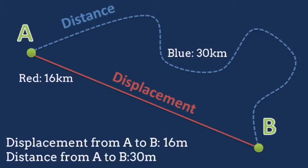Let's say you are at point A moving to point B. The displacement, shown by the line in red, is 16 kilometers, and the distance, shown by the line in blue, is 30 kilometers. What if after reaching point B, you traveled back to point A along the same path? The distance you have traveled will now be 60 kilometers, but your displacement will be zero as you are back at point A.